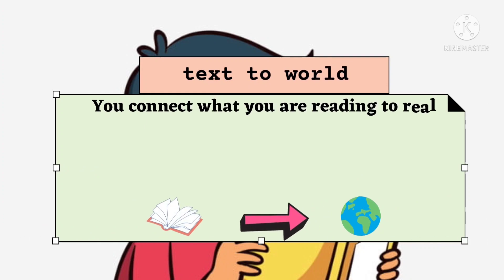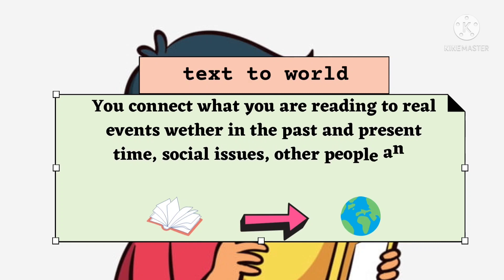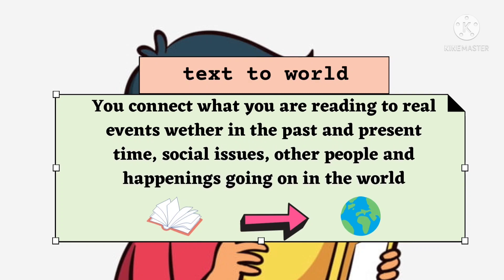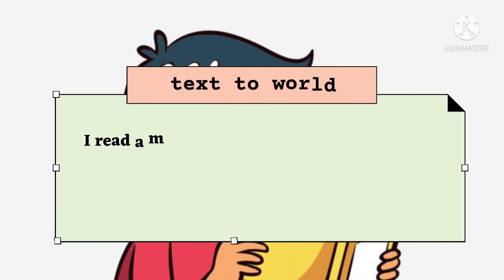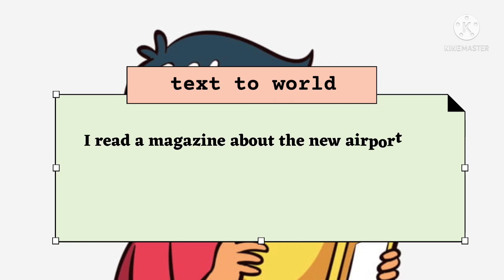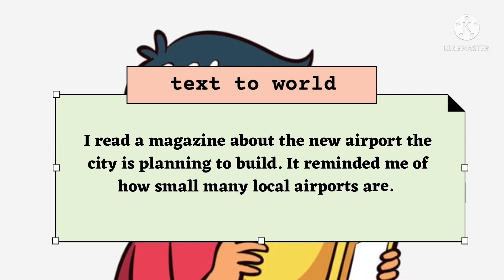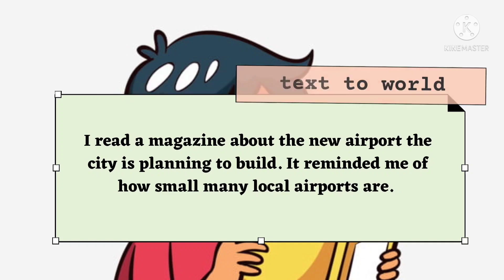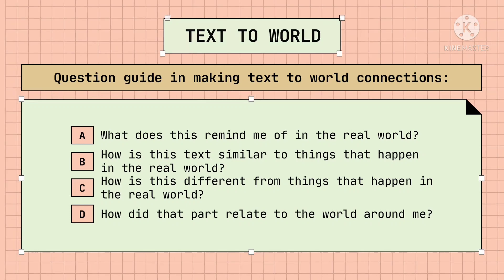Lastly, in text-to-world, you connect what you are reading to real events, whether in the past, present time, social issues, other people, and happenings going on in the world. I saw a news about how water pollution affects marine animals. It reminded me of the whale that died in Davao. Another example: I read a magazine about the new airport the city is planning to build. It reminded me of how small many local airports are. And here are the guide questions you can use in making text-to-world connections.